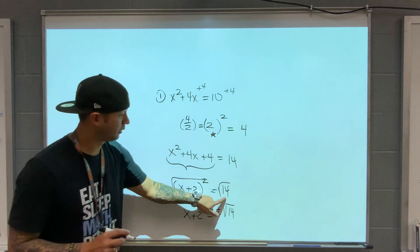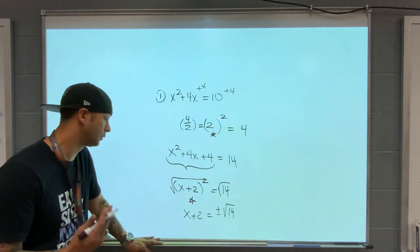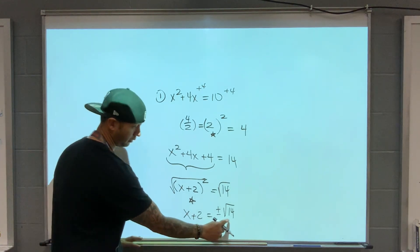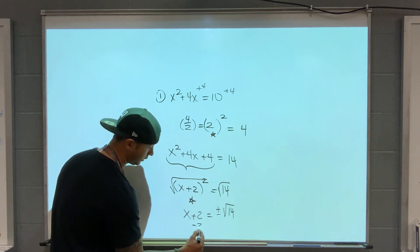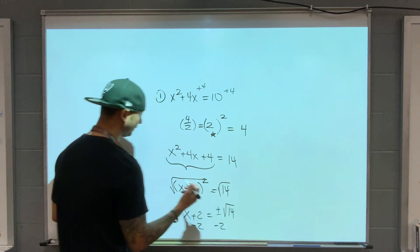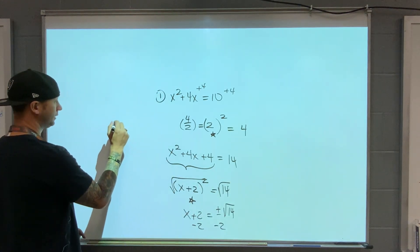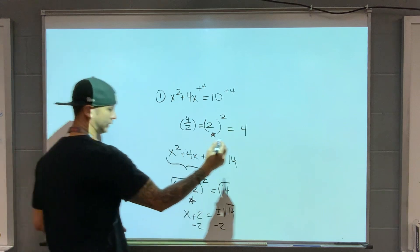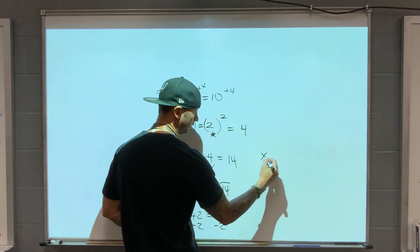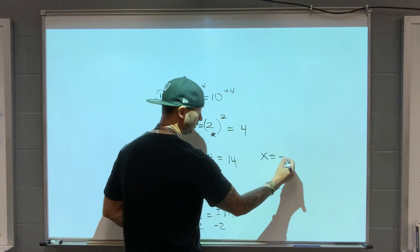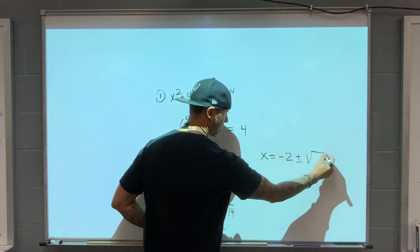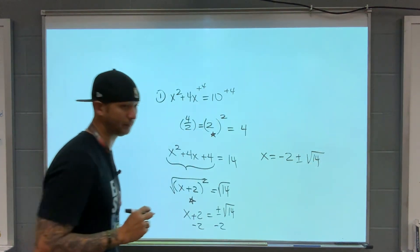Is 14 simplifiable? 2 times 7 — they're both prime, so no change. Subtract 2 from both sides. Final answer is x equals negative 2 plus or minus root 14.